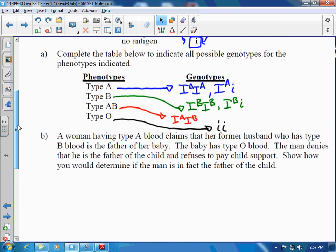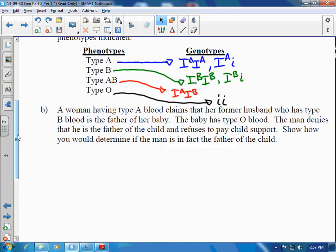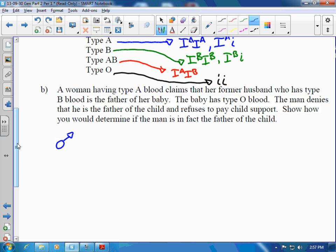Now let's jump into the question, knowing how the genotypes and phenotypes work. Let's read this together. A woman having type A blood. We stop and we think about what we've got as we read. Here's the man, there's the woman. A woman having type A blood. I know she's got type A, which means she's got at least an IA. I don't know what the next letter is, at least not yet.